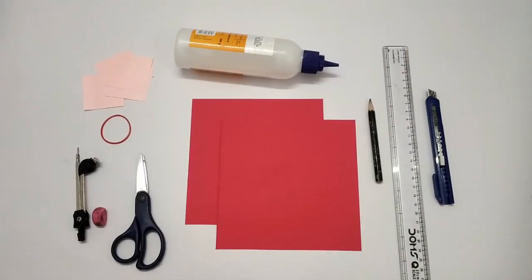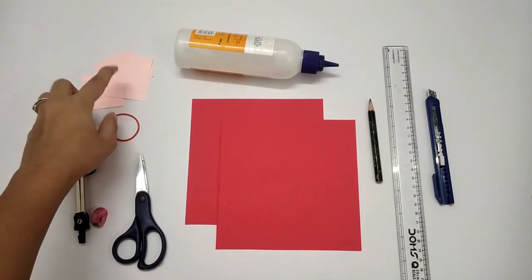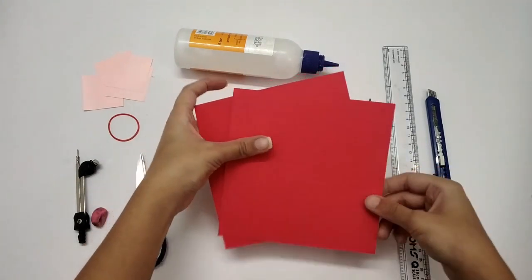Things you will need: compass, rubber, scissor, rubber band, some designer sheet, craft sheet both 15 by 15 centimeter, pencil, scale, cutter, and glue.